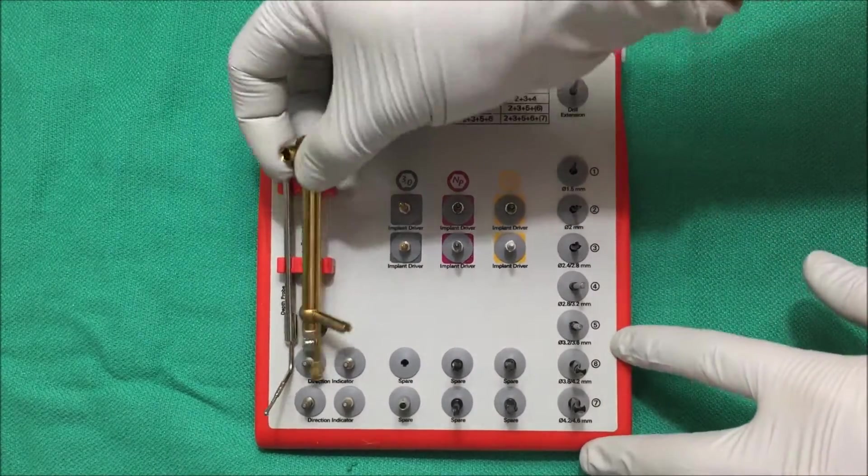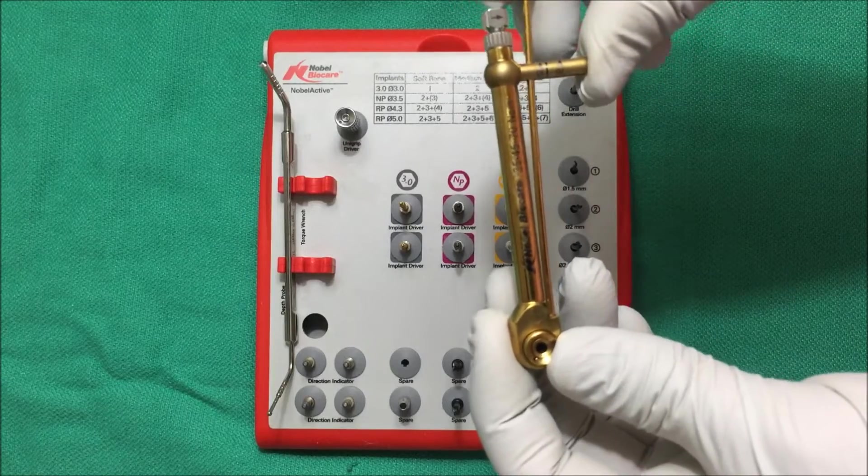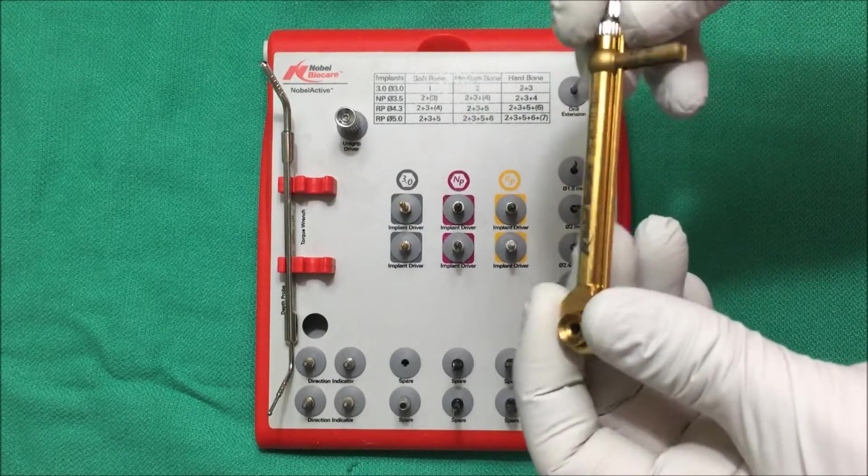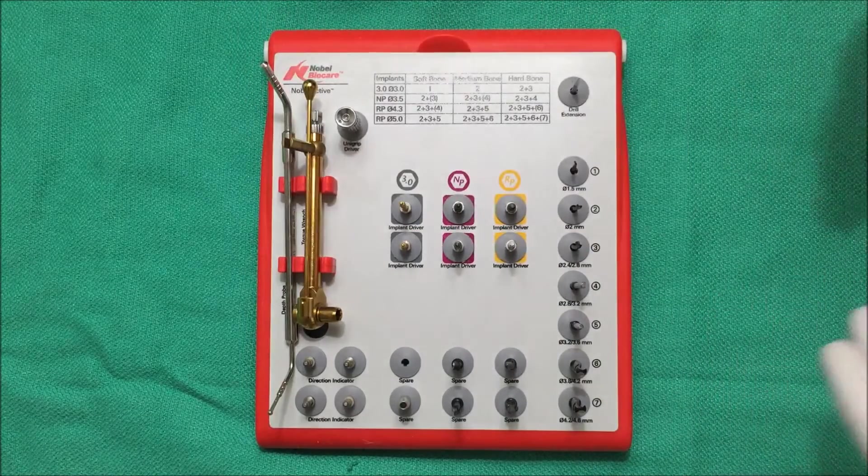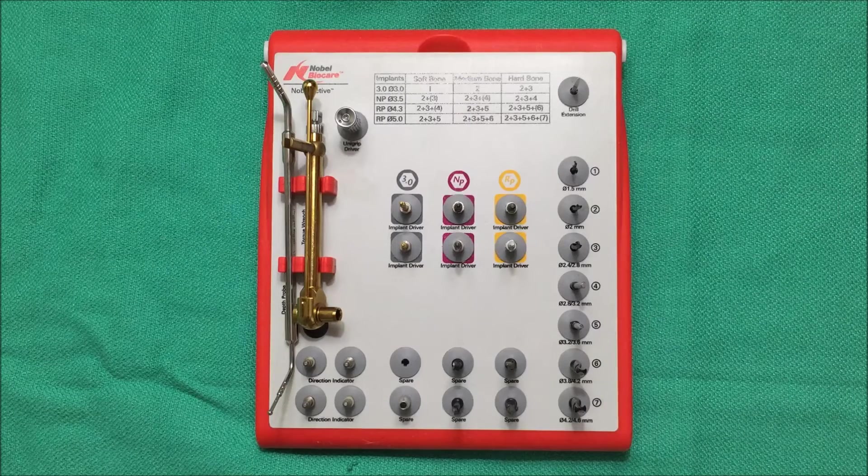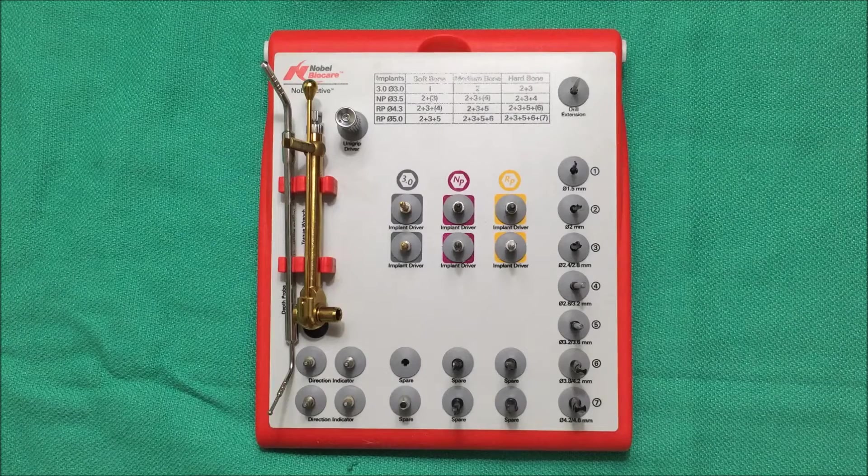So I just want to add a little caveat to that. Nobel BioCare recommends that you do not insert implants at a higher torque than 70 newton centimeters because it could damage the implant or damage surrounding bone. I have placed implants at a higher torque and there is literature supporting very high success rates with higher torque values. But I just want to tell you what the manufacturer recommends. I typically try to aim for 40 newton centimeters.